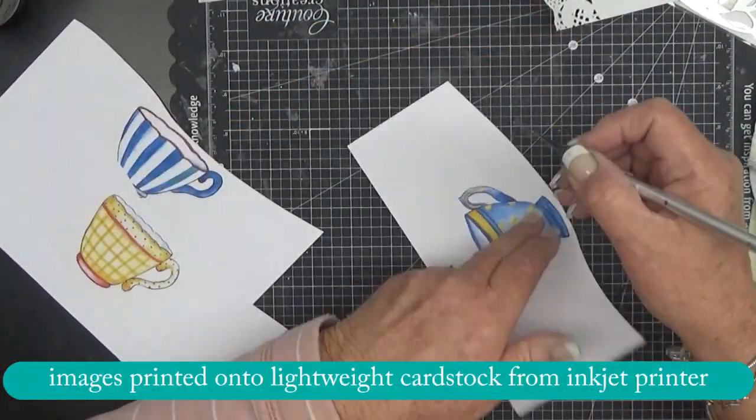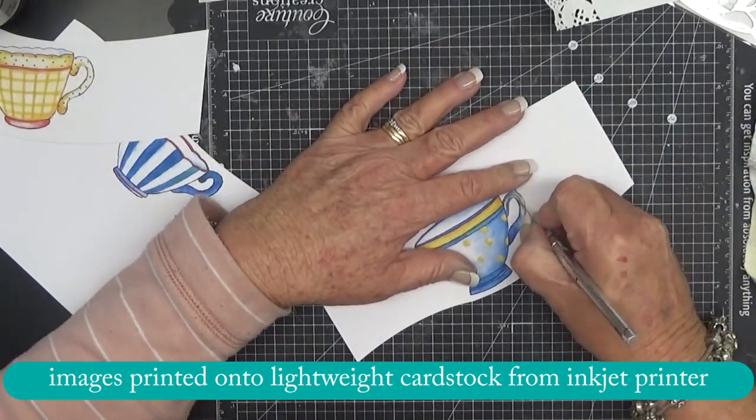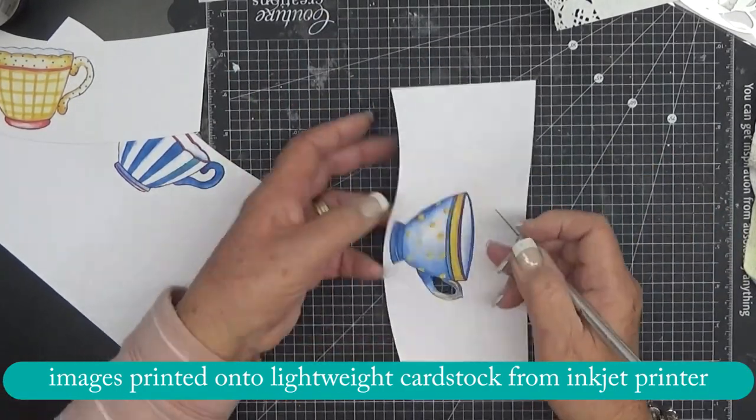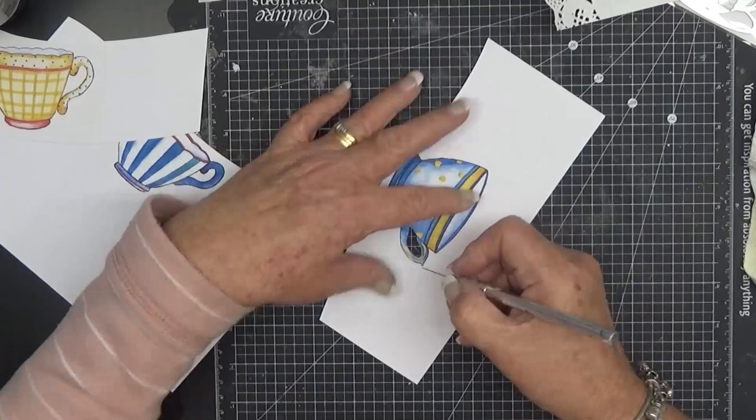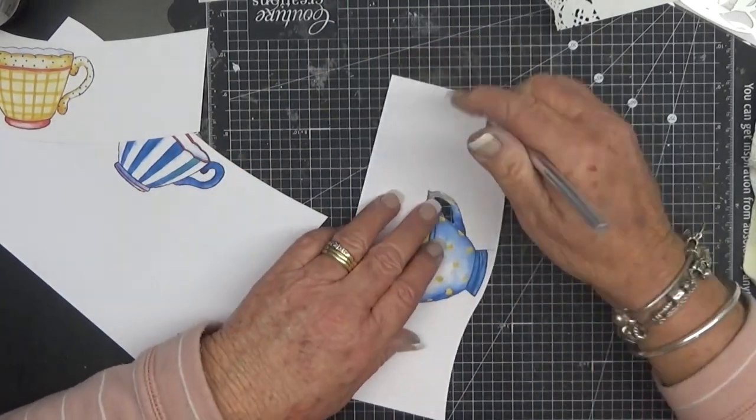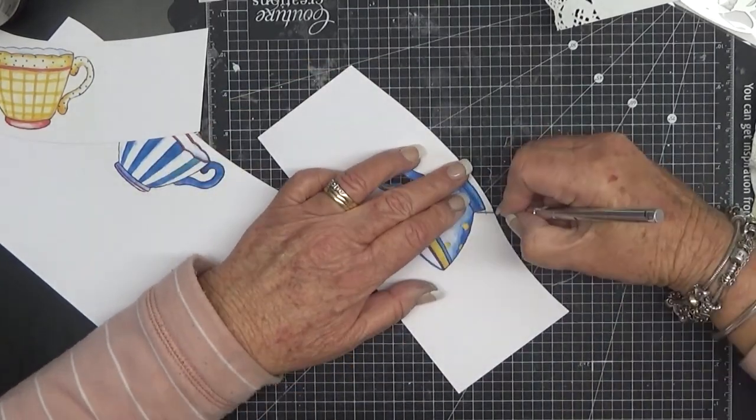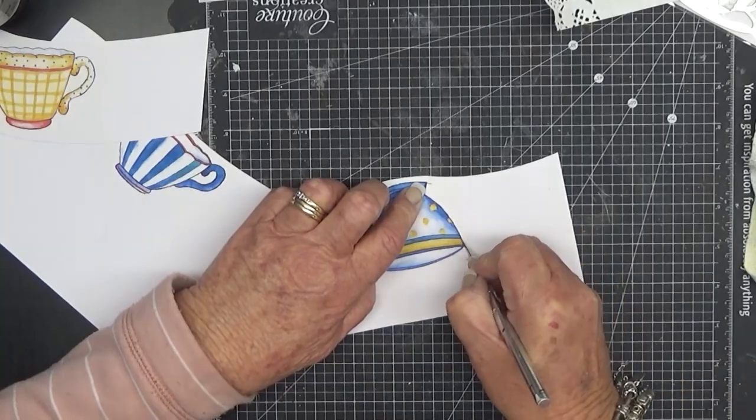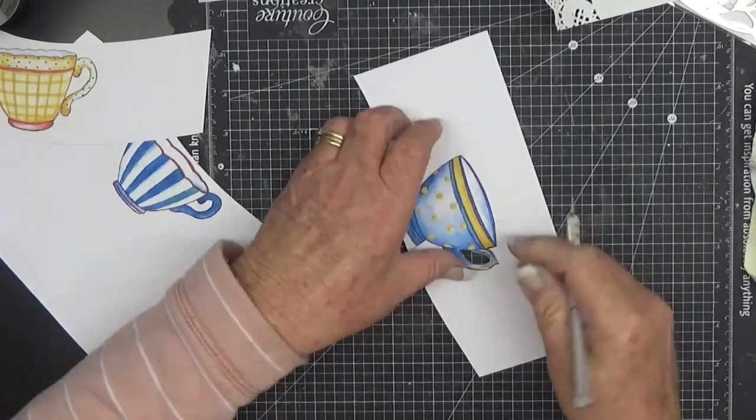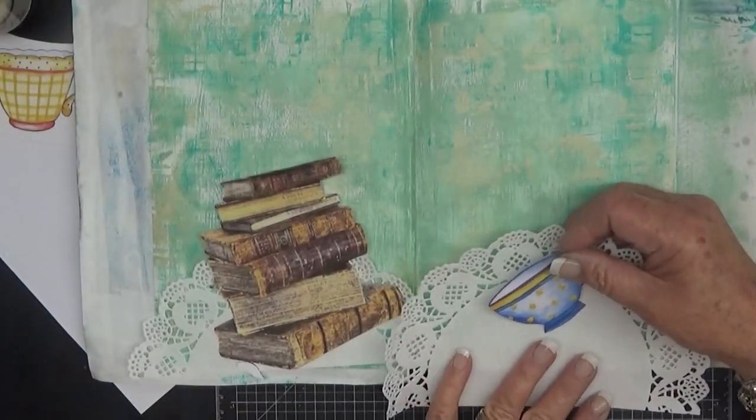I also printed these, I got these from Google Images and I printed these using the inkjet printer onto lightweight cardstock. Now you'll wonder why the colors in these are very, I would call them retro, but they're not vintage like the stack of vintage books so the quote ties it all together I think.